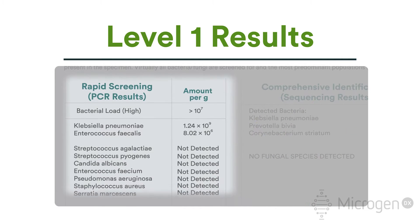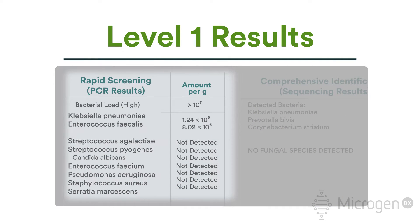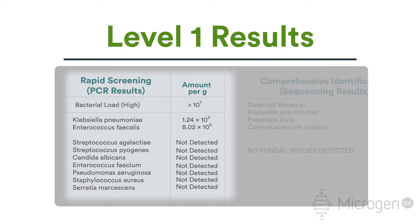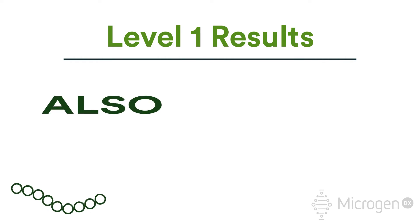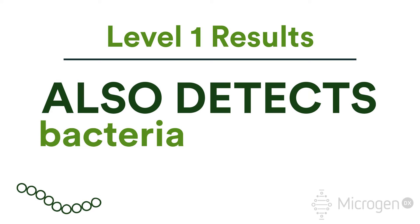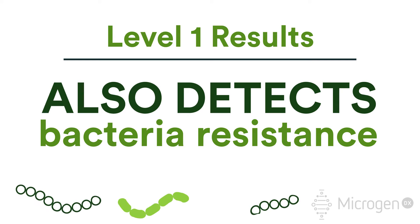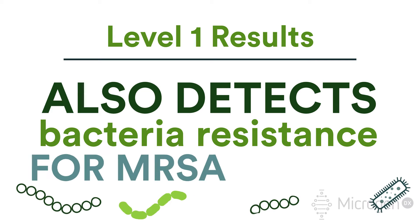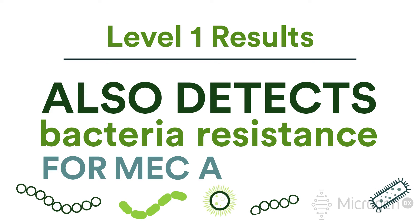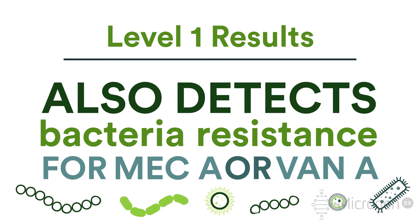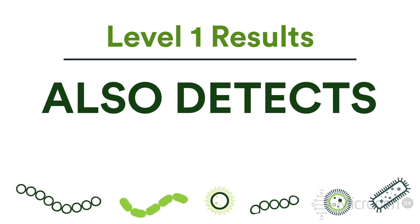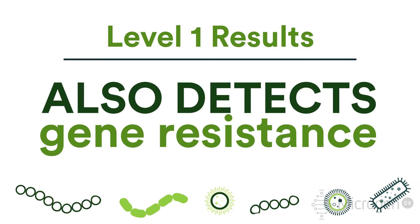Level 1 will conduct a rapid screen of eight bacterial species and one fungal species, Candida albicans. Level 1 PCR will also detect bacteria resistance genes for several antibiotics. These include MRSA, MEK-A positive, and VAN-A for vancomycin resistant enterococci. In addition, we can detect the gene resistance for the following classes of antibiotics.